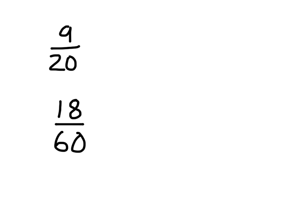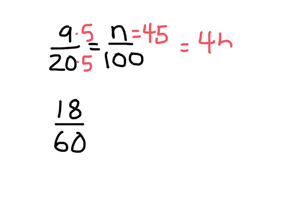Alright, so let's go ahead and see what we got. So 9 over 20. This would equal n over 100. Again, 20 is a number that multiplies evenly. 20 goes evenly into 100. It goes 5 times. So 20 times 5 is 100. 9 times 5 is 45. Therefore, 9/20 is the equivalent of 45%.